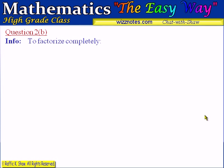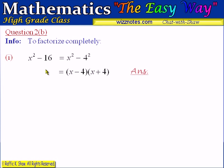Question 2b asks us to factorize completely, and there are two parts. Part 1 is x squared minus 16. This is the difference of two squares — 16 is a perfect square of 4, so we write it as x squared minus 4 squared. Applying the difference of two squares rule, the result is x minus 4 multiplied by x plus 4.